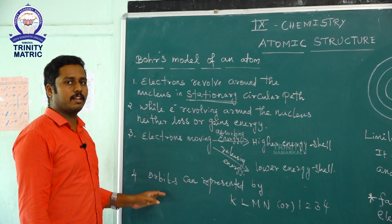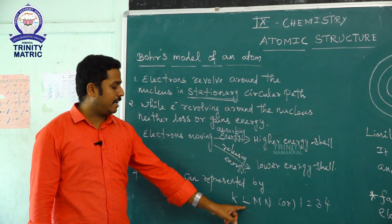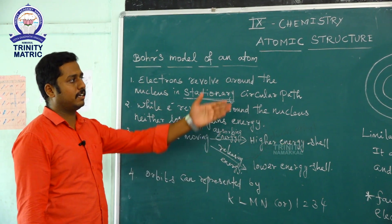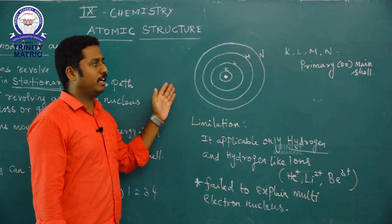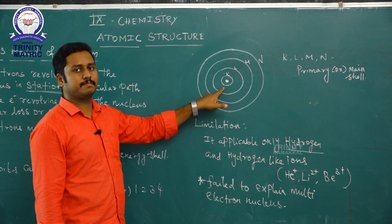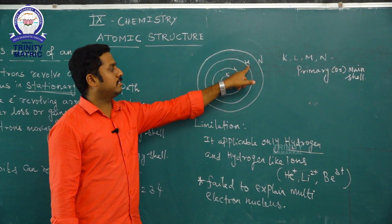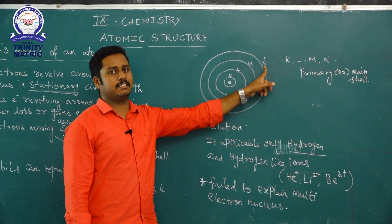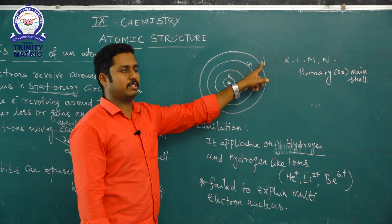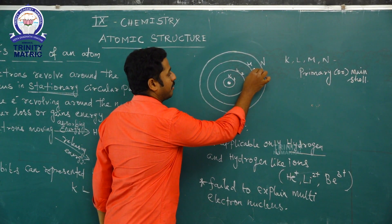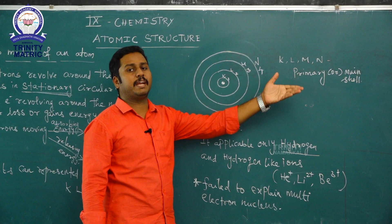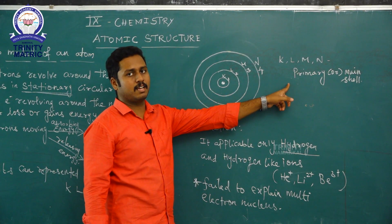In the Niels Bohr model, the orbitals are represented as K, L, M, and N, or equivalently numbered 1, 2, 3, 4. In the atom, the nucleus is at the center; from the nucleus outward, the first shell is the K shell, then L shell, M shell, and N shell. These K, L, M, N shells are known as primary shells or main shells.